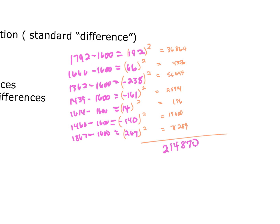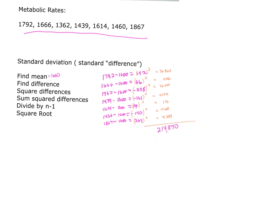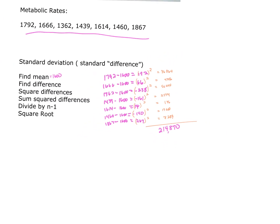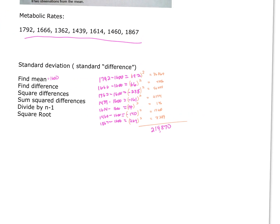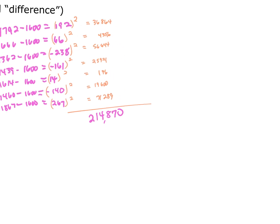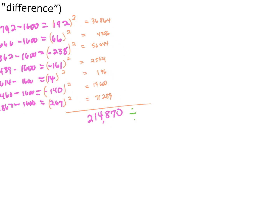When we add all of that up — I know it seems like it should be higher, but that's our sum. Notice what we're going to do: sum the squared differences. Now we're going to divide by n minus one. How many values are there in this set? There are seven values, so we are going to divide by six.